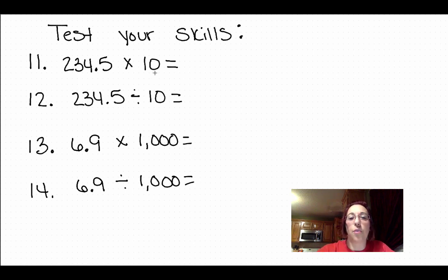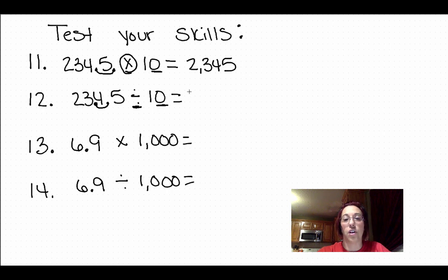Welcome back. Let's get to work. This is multiplication by 10. Multiplication, I want my number to get bigger so my decimal moves to the right one spot. I get 2,345. Number twelve, we have division by 10, one space. Division, my number gets smaller so I move it one space to the left. I have 23.45.